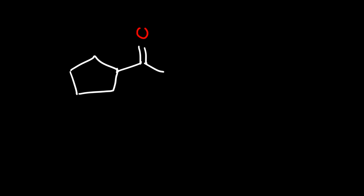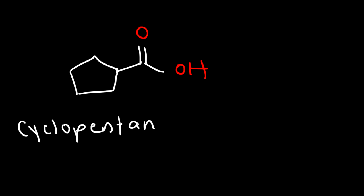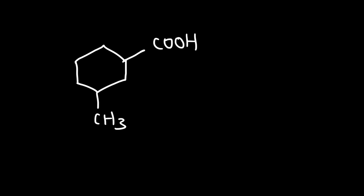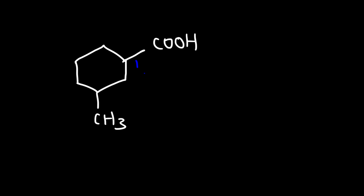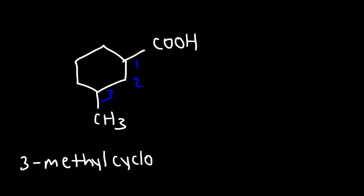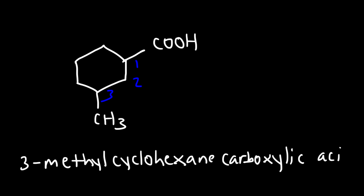Likewise, let's say if we have a cyclopentane ring with the carboxylic acid functional group. This is going to be called cyclopentane carboxylic acid. Now go ahead and try this one — what is the IUPAC name for this molecule? So we have a cyclohexane ring and a carboxylic acid, so those two combine to give cyclohexane carboxylic acid. But now we have a methyl group attached to it. This is automatically carbon 1 due to the carboxylic acid, and so this is going to be called 3-methylcyclohexane carboxylic acid.